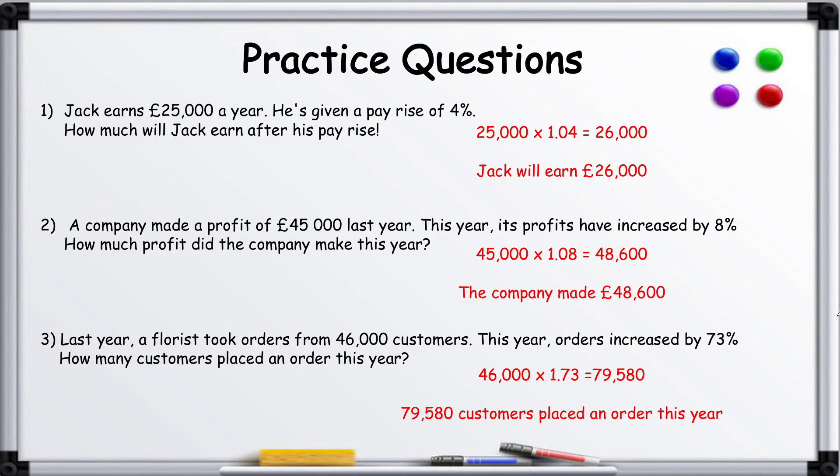Jack earns £25,000 a year. He's given a pay rise of 4%. How much will Jack earn after the pay rise? So you have £25,000 here and you multiply it by 1 point and whatever that percentage increase is, so it's 1.04, and that way you get £26,000. So Jack will earn £26,000.